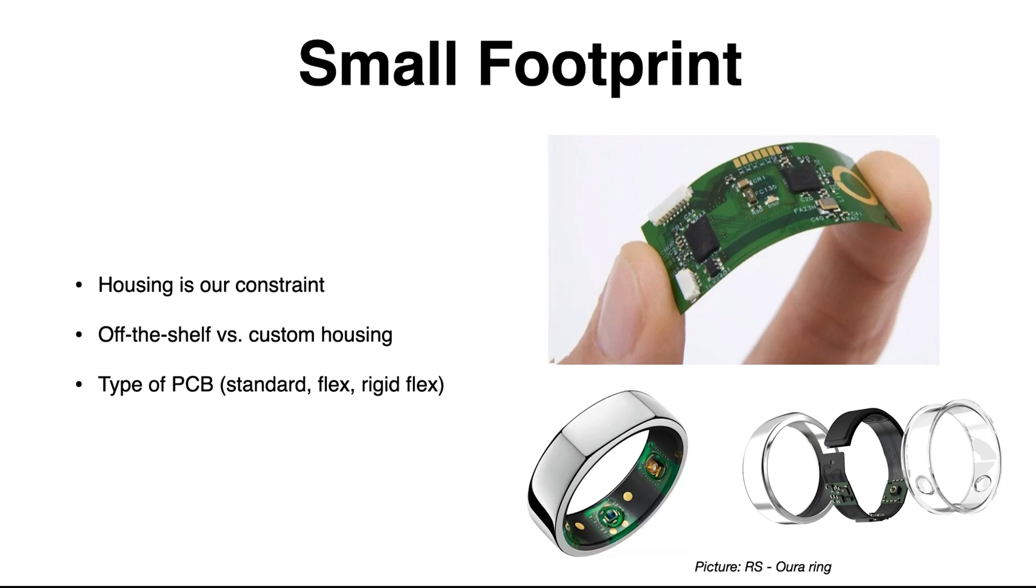Small footprint. So, of course, if you're making a wearable design, ideally you'll have a small footprint for that design as well. And the housing will be our constraint. Basically, there's two options. You can use an off-the-shelf housing or you can use a custom housing that is designed. For instance, there's a nice example here in the pictures below. The question is, how far can you go in this sizing? If the housing is really small, we'll have to go towards flex or rigid flex PCBs, which will increase the complexity a bit. So it is very dependent on the housing you want to use.